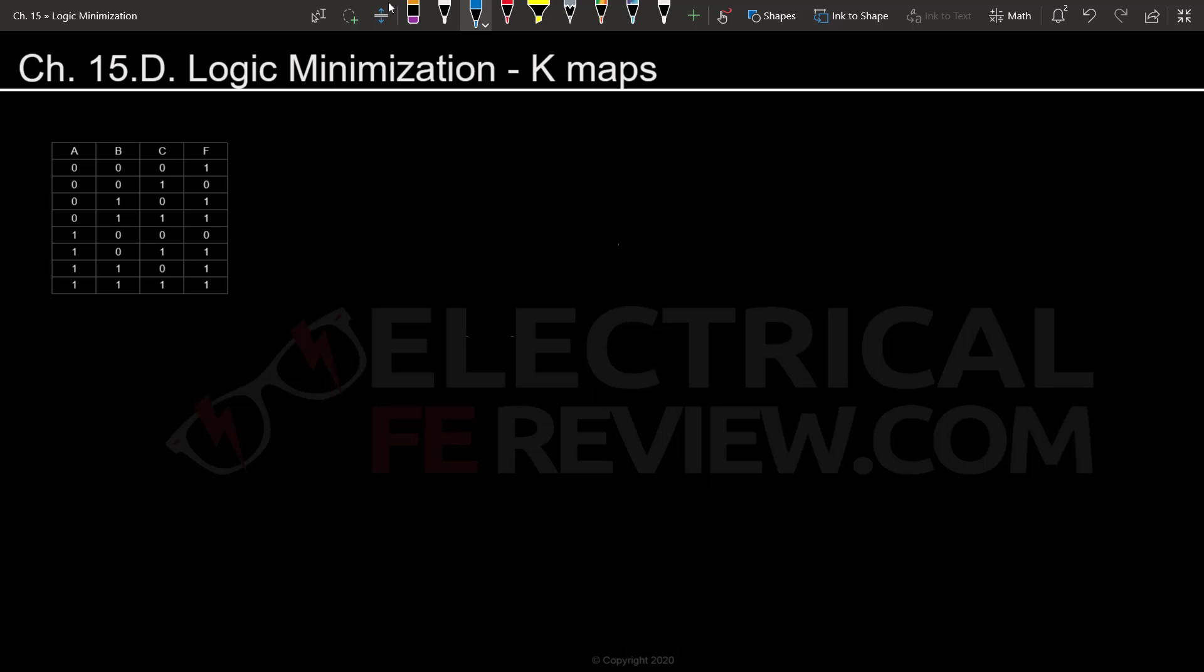So let's look at kmaps. To start a kmap, we're basically going to create a table with the variables. I'm going to put A and B here and I'm going to put C right here.